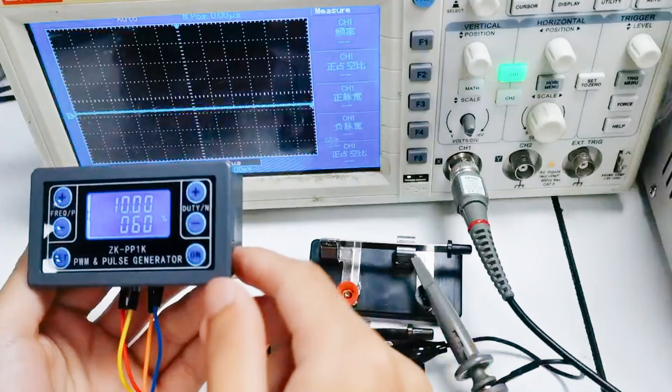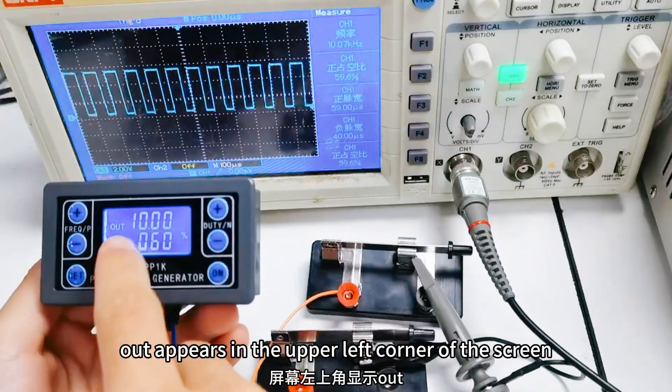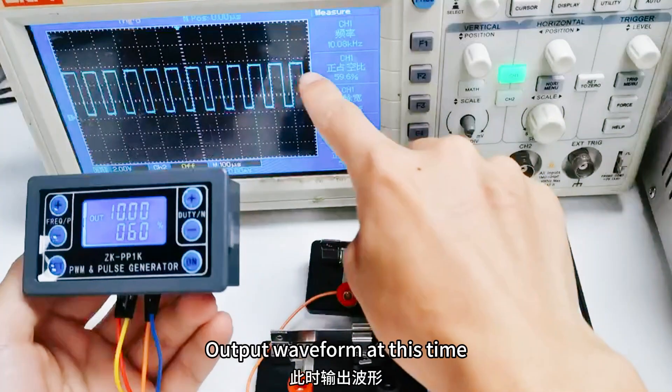No waveform output. Press on again. Out appears in the upper left corner of the screen. Output waveform at this time.